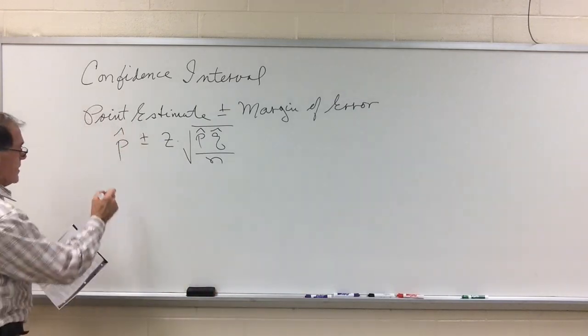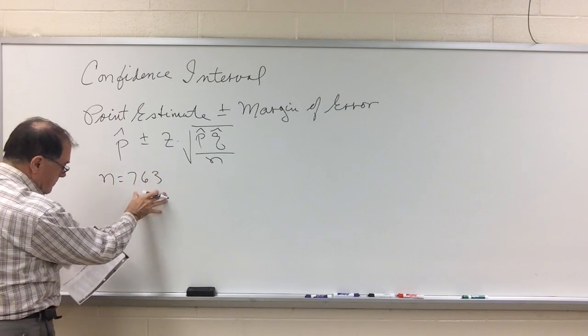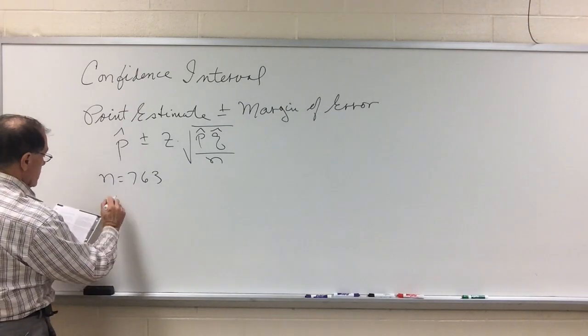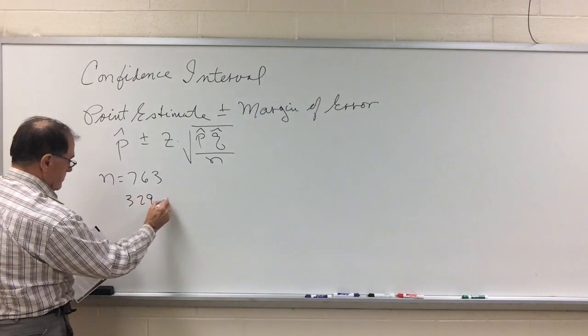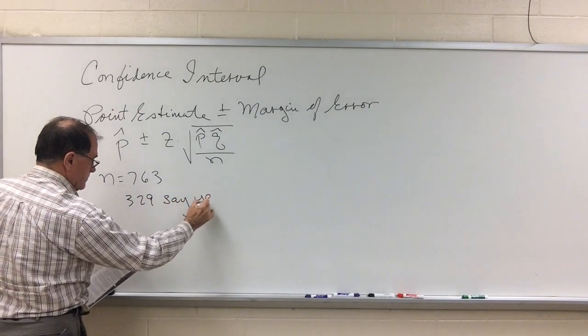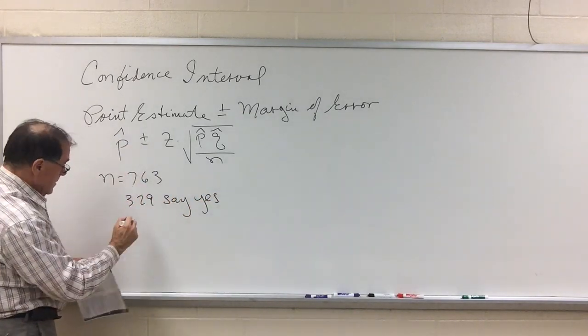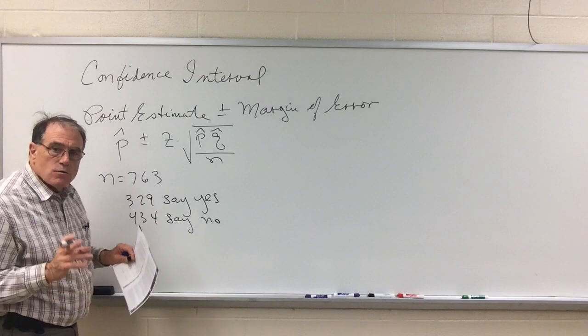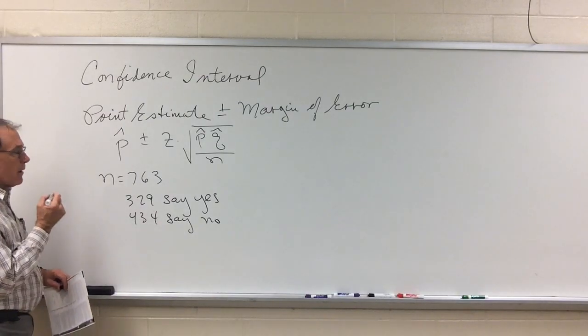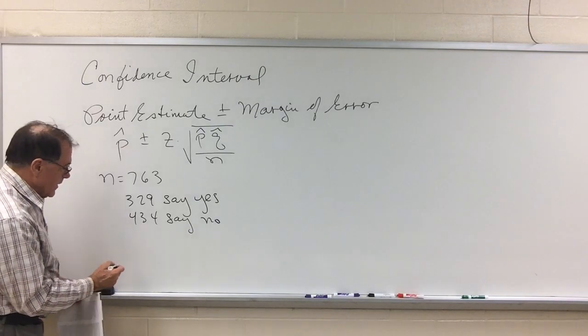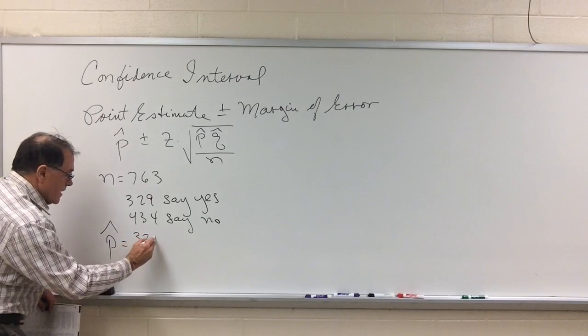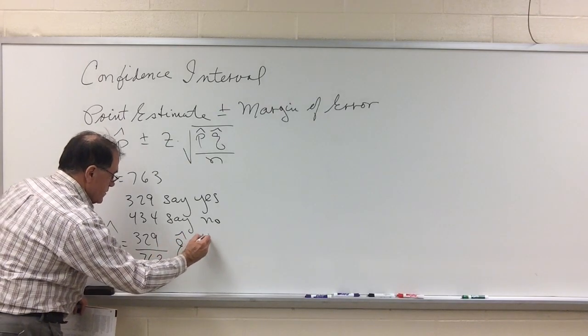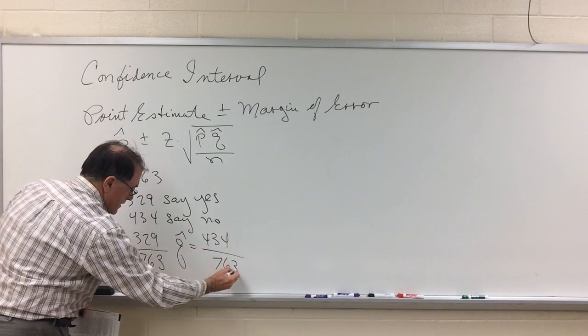And we're going to sample 763 people and of those 763 people, 329 say yes, they'd like to go. Well, that means that 434 say no. Now we're interested in those going. So p-hat is the proportion of those who want to go and so p-hat is 329 out of the total 763 and q-hat is 434 out of 763.